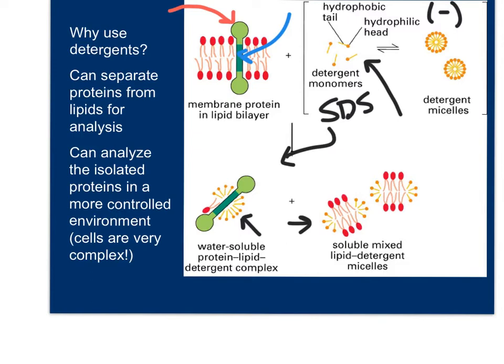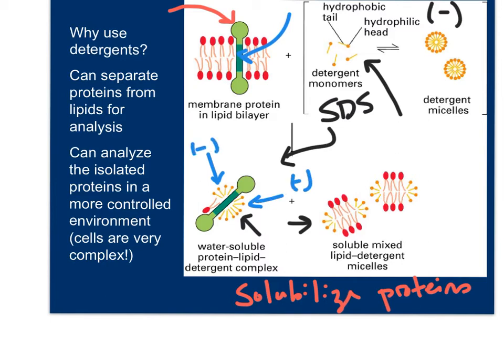Together, what happens is that this allows for proteins to be removed from membranes and solubilized — meaning that the protein can now interact with water. Why can it interact with water? Because the heads on the SDS have that negative charge, which allows for interaction with the partial positive and partial negative charges on the hydrogens in water. And when you do this, the detergents actually end up being separated from the proteins. So this is a very, very important tool we use in cell biology.